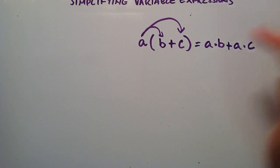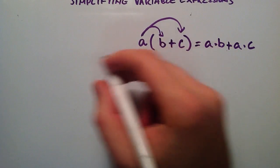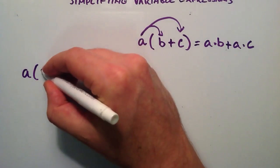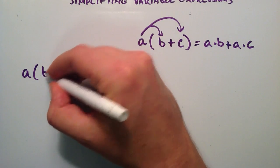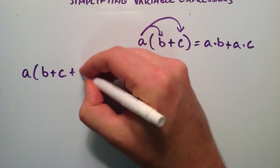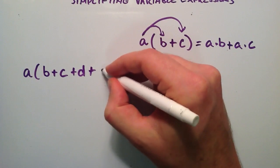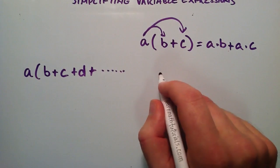as long as they're all within the same grouping mechanism. So basically we have some number A, and inside of the grouping we have, say, B plus C plus D plus as many different terms as you want.